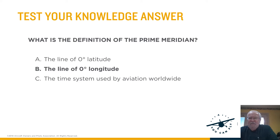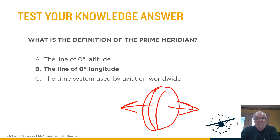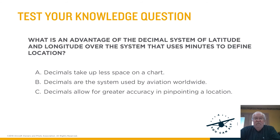Some of you are football fans — when they talk about a lateral pass, that means side to side. So latitude goes side to side; a longitudinal pass would go the other way. Does that make sense? What's the advantage of the decimal system of latitude and longitude over the system that uses minutes? The answer is C — decimals are the system used by aviation worldwide.